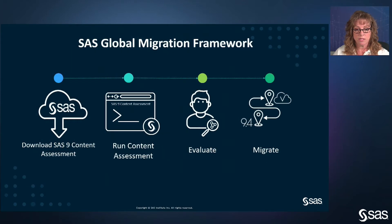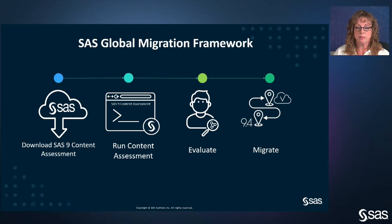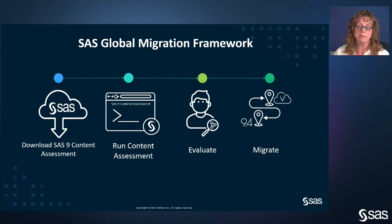Today's emphasis is going to be on a term that we call the SAS Global Migration Framework. This is a four-step plan. It starts with content assessment — downloadable applications we're going to discuss. We're going to run this tool and show you how that is done and what the output looks like. Next, we're going to spend time discussing the output created from this process in the form of reports, which will help you describe what's in your system and evaluate a plan forward. And finally, we're going to talk about the actual migration process, describing what will happen and how that plan can be visualized in something we call a migration roadmap.